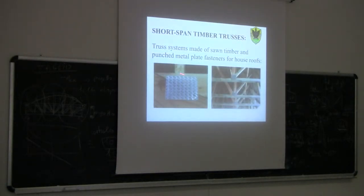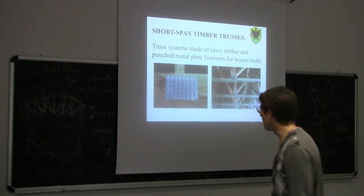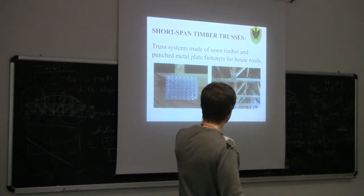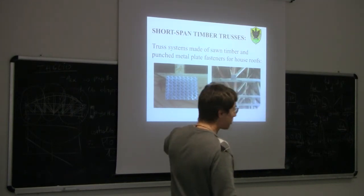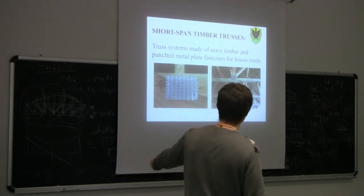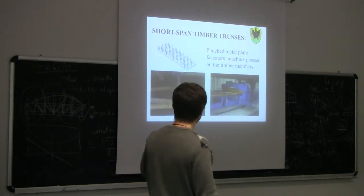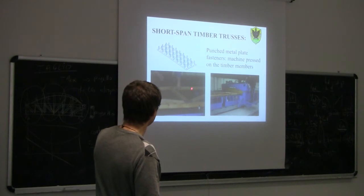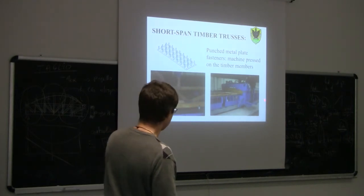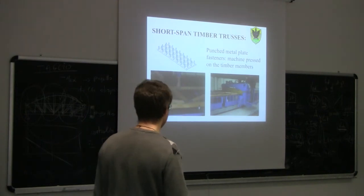For short-span timber trusses, a typical solution — shown in a photo from New Zealand — is quite common: timber with toothed metal plates. These punched metal plates are basically pressed into the timber members using hammering presses. This is a solution that in Italy you would never find.